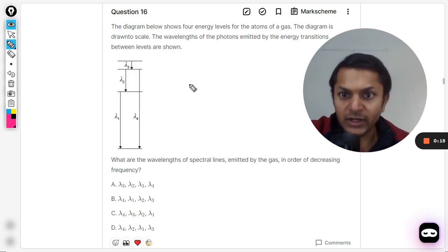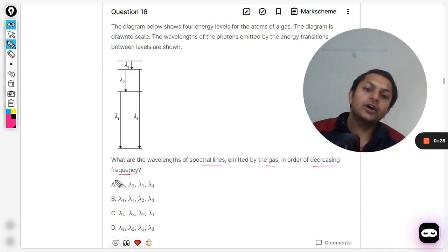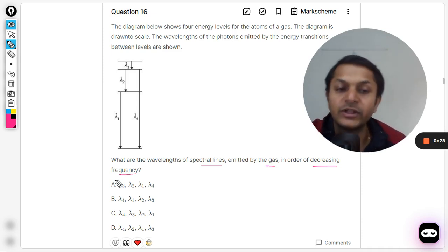Lambda 1, lambda 2, 3, 4. What are the wavelengths of the spectral lines emitted by the gas in order of decreasing frequency? Okay, so a bit confusing - they're talking about the wavelength and the frequency, but don't worry.